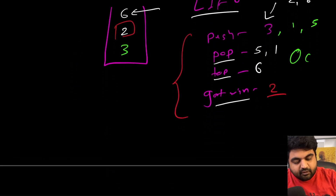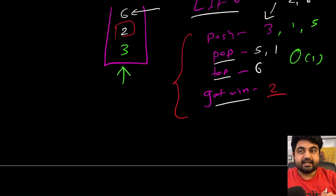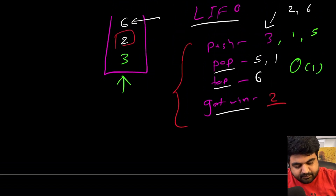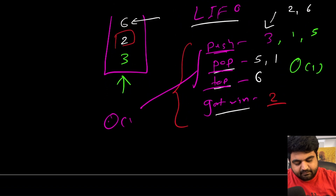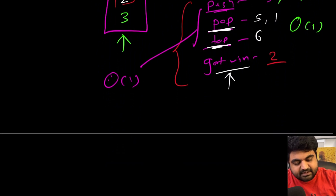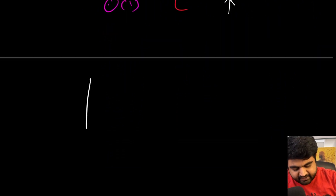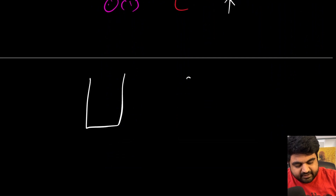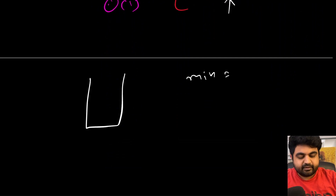We need to solve all of these operations in O(1) time, which means we will have to do something different when designing our stack. The push, pop, and top methods can all operate in O(1) time — no issues with that. However, getMin is a little tricky because we need to know the minimum element at any given moment.